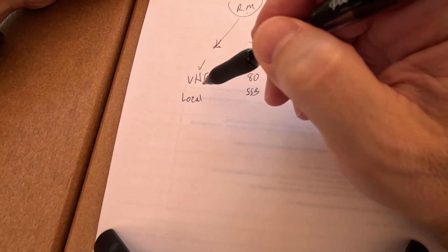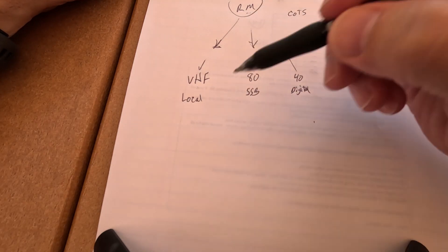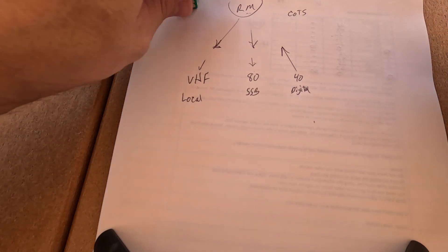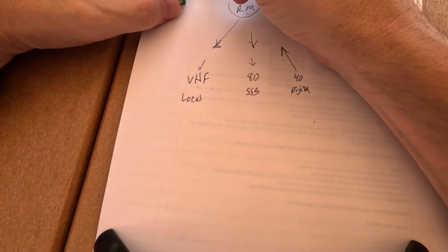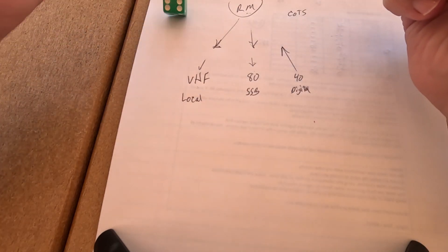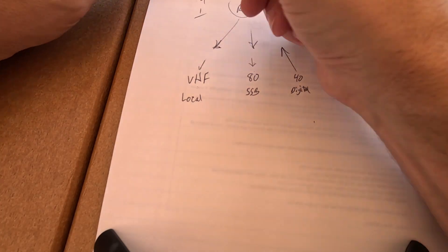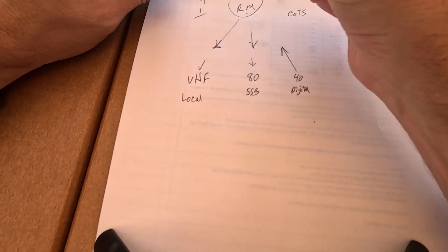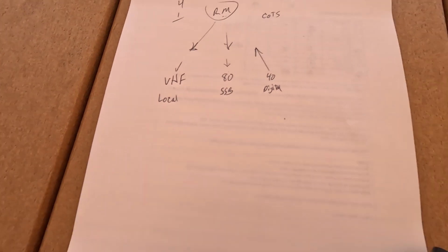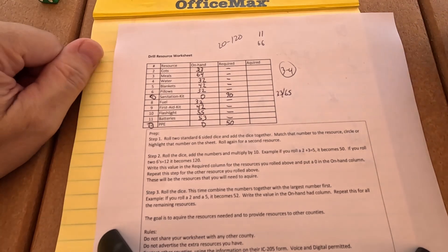I also came up with the idea that local net check-ins could participate as well. When somebody checks in, you could roll one die for them — maybe you get three resources from them, the next person gets four, the next gets one. Depending on how many people check in, you might get enough from your local net to fulfill your resource requests.